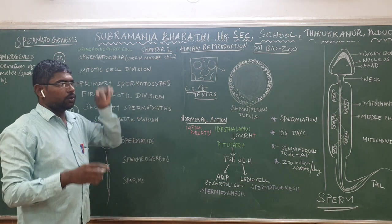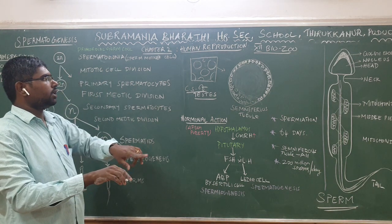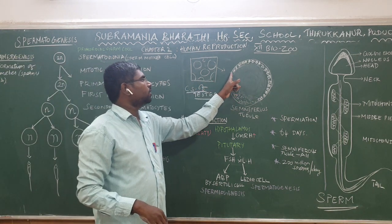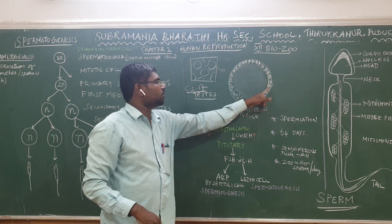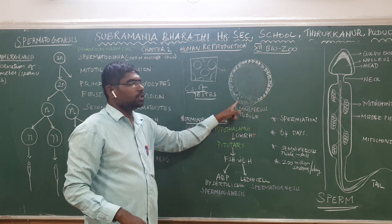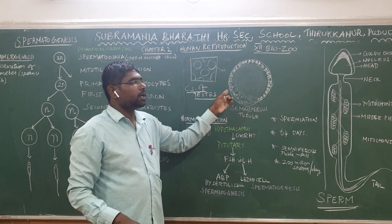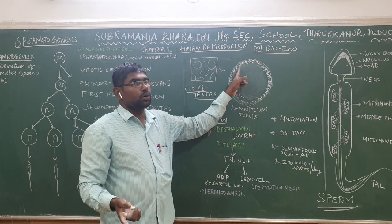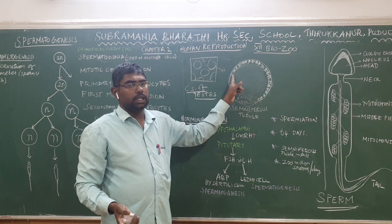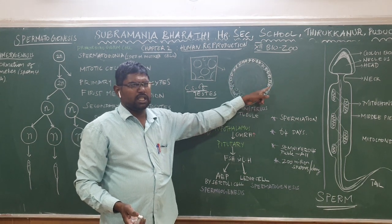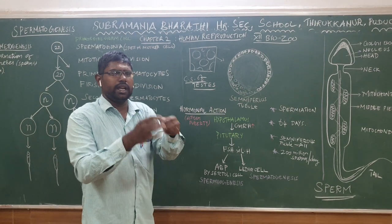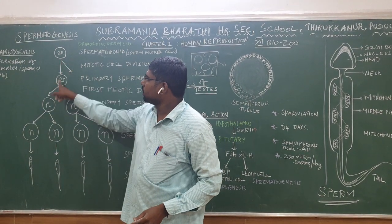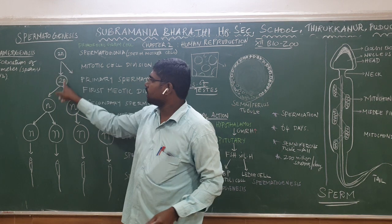During development, the primordial germ cells develop into spermatogonia. Spermatogonia undergo mitotic cell division. This is the first step in the process of spermatogenesis.